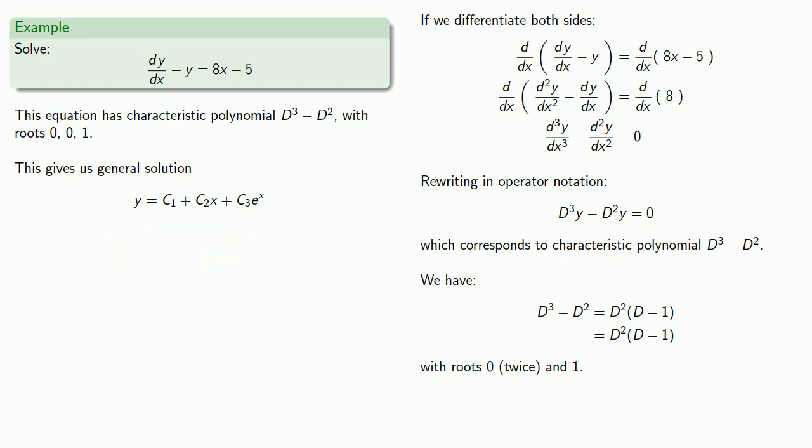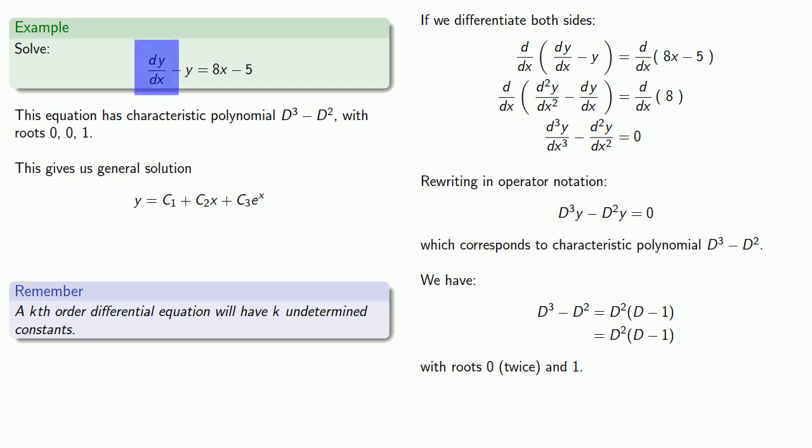And that seems great until you remember a very important idea. A k-th order differential equation will have k undetermined constants. And we're starting with a first-order linear differential equation. We should only have one undetermined constant. We have too many constants. So what can we do?